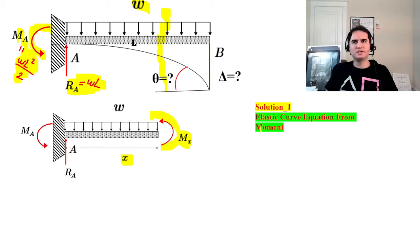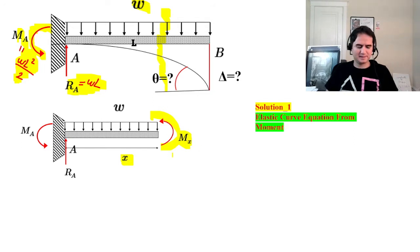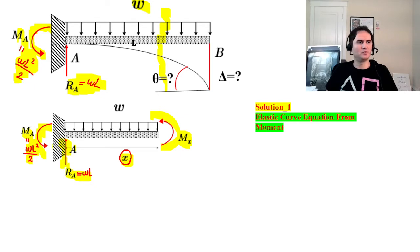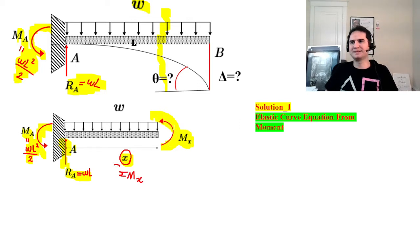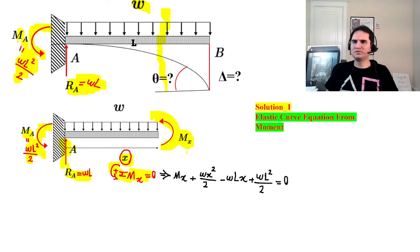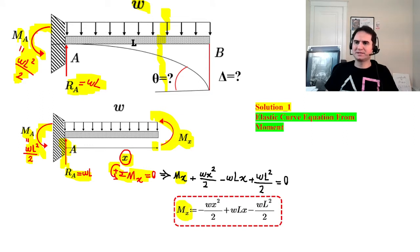This is the approach for calculating deflection or elastic curve based on the moment equation - we cut the cross-section at length x, less than the entire beam length, and develop the moment equation. Taking the summation of moments about point x equals zero and rearranging gives: Mx equals negative Wx squared over 2 plus WLx minus WL squared over 2.